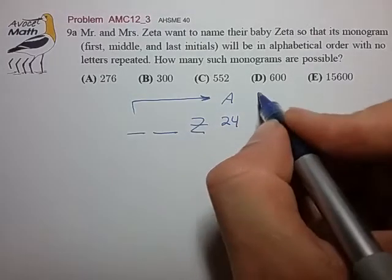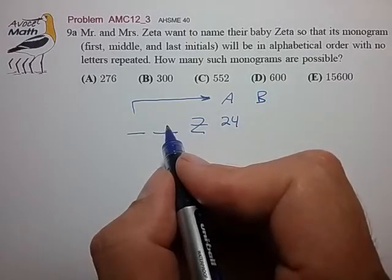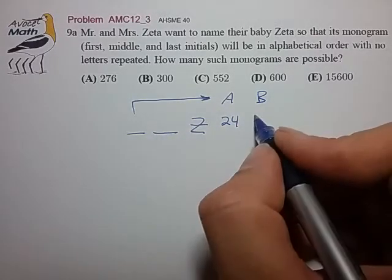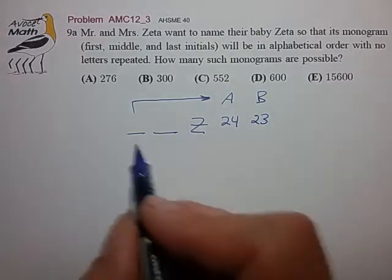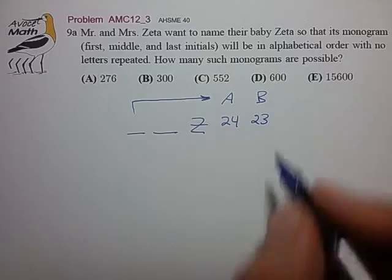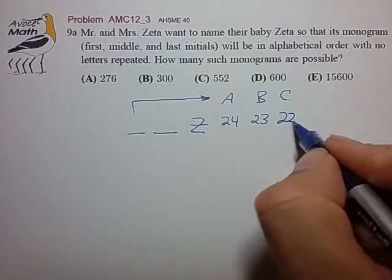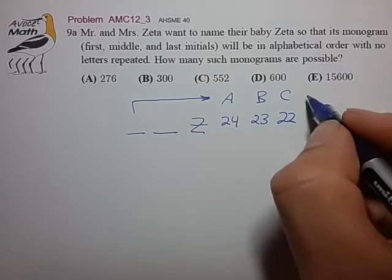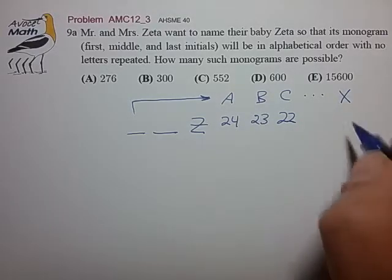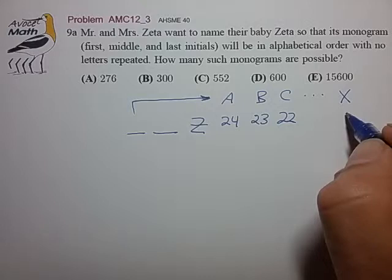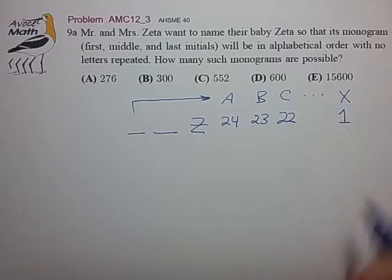If we choose the first letter to be B, then that constrains the middle initial a little bit more, and we only have 23 choices for the middle initial in order to form three letters in alphabetical order. Likewise, if we choose C, the middle initial can be chosen in 22 ways, and we can follow this logic all the way to the choice of the first letter to be X, in which case the middle initial always has to be Y, leaving us with only one choice.